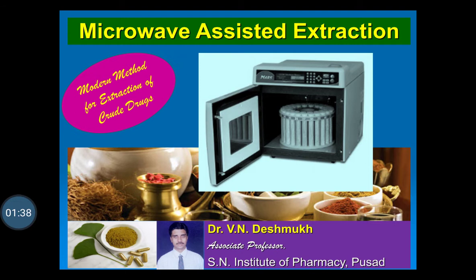This facilitates the leaching of phytoconstituents from the cell into the surrounding solvent used for extraction. The high temperatures attained in microwave-assisted extraction increase the dehydration of the cellulose and reduce its mechanical strength, which in turn helps the solvent to access easily the compounds or phytoconstituents present inside the cell.